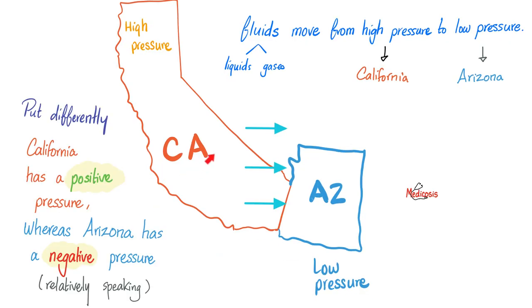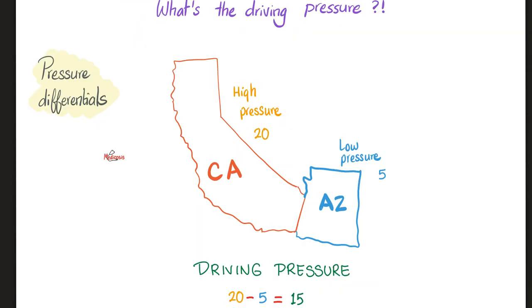This is true for liquids and gases because these are fluids according to physics. This pressure difference is known as pressure differentials. If the air is blowing from California to Arizona, it's as if California has a positive pressure, relatively speaking, whereas Arizona has a negative pressure relative to California. Because positive pressure pushes, but negative pressure pulls.